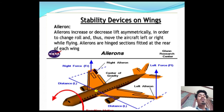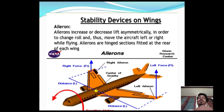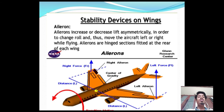Stability devices on wings include ailerons and flaps. Ailerons increase or decrease lift on each side to change roll and thus move the aircraft left or right while flying. Ailerons are hinged sections fitted at the rear of each wing. For direction change we use the rudder in the tail unit, and for lift we use flaps and elevators.